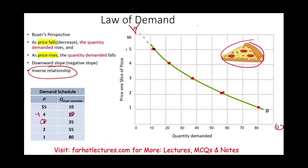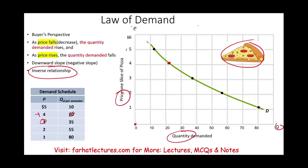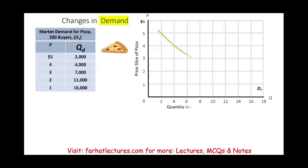If the prices keep on going higher and higher, at some point you say, 'I'm not going to consume anything.' If the slice of pizza is ten dollars, you may consume zero — so you'll be on the y-axis. Now, what we did here is we looked at price versus quantity demanded. But is this the only thing that could affect the demand of pizza? No — there are other factors that could affect the aggregate demand of pizza.